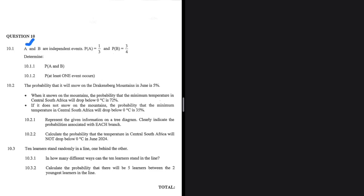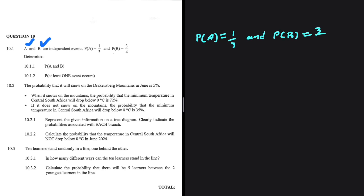We have events A and B that are independent. The probability of A is equal to 1 divided by 3, and the probability of B is equal to 3 divided by 4. For question 10.1.1, we're looking for the probability of A and B. The probability of A and B is equal to the probability of A multiplied by the probability of B.